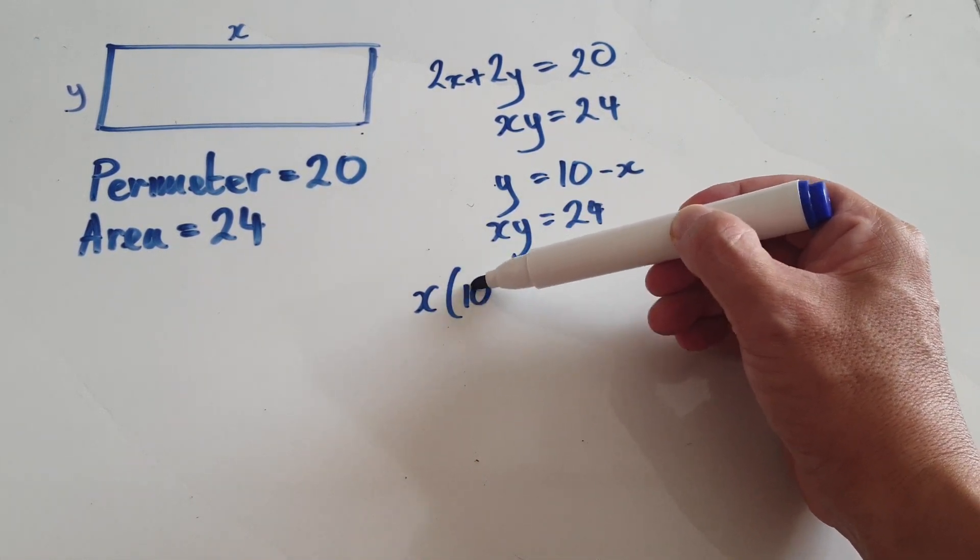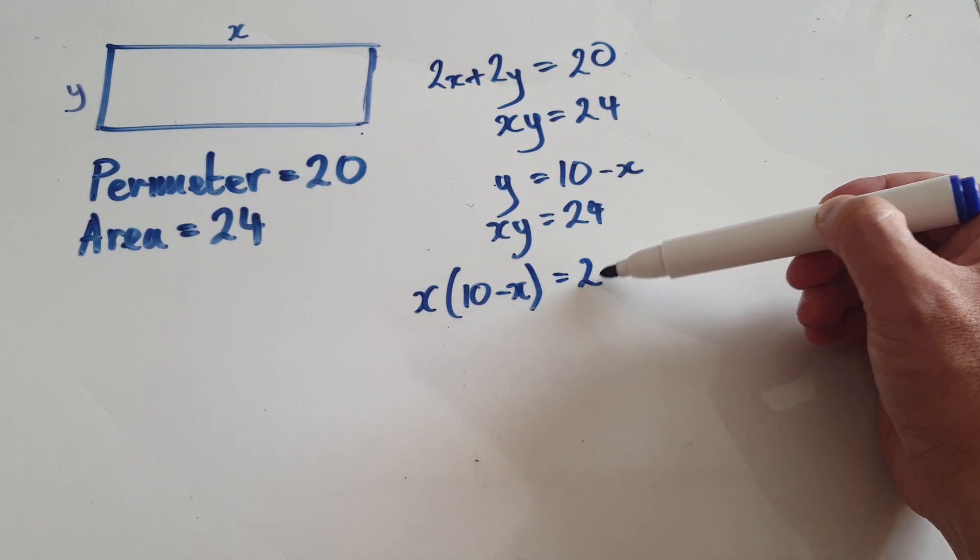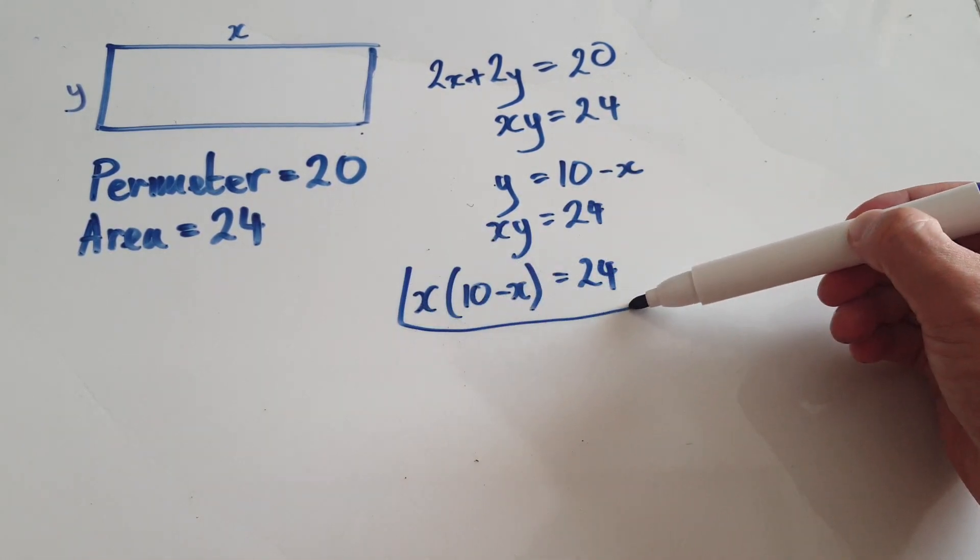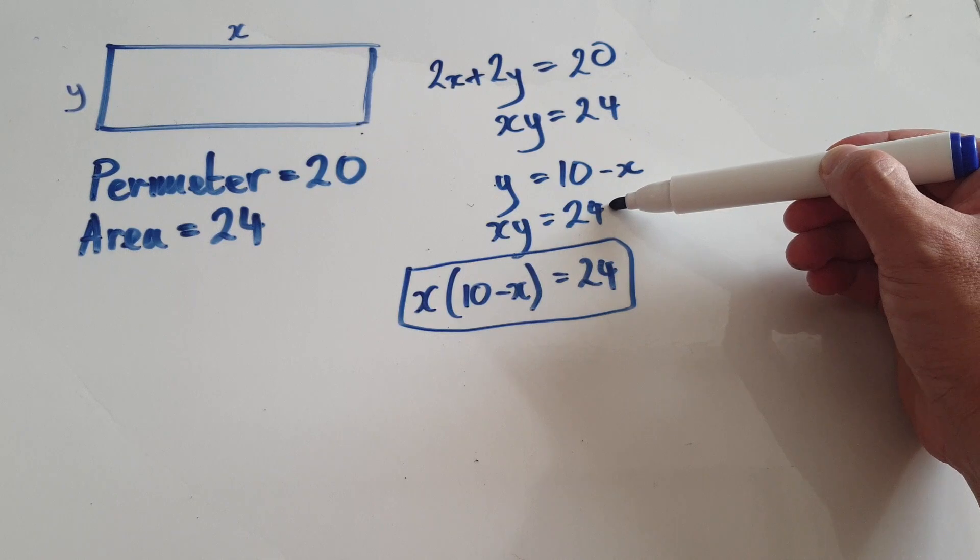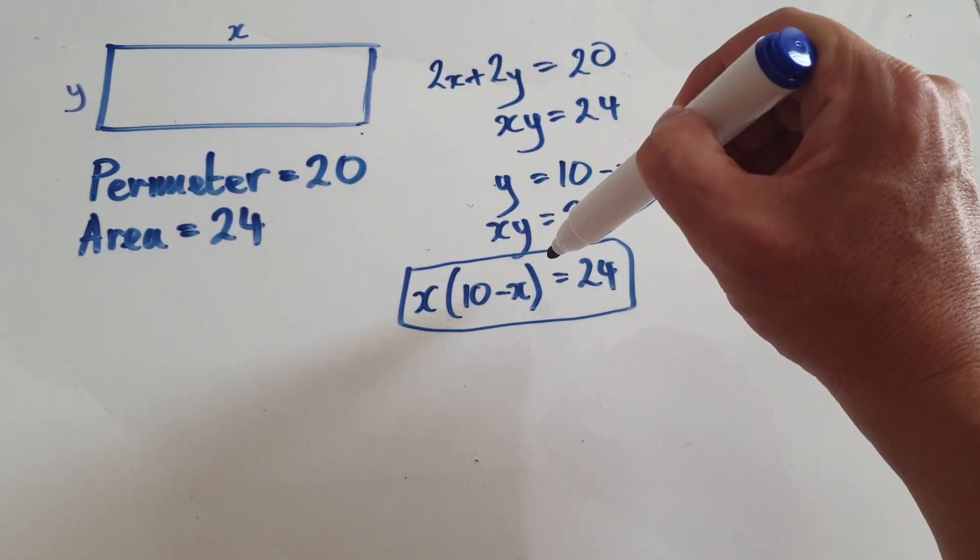So that would be x, remember y is this thing here, so put it into the y here. So that would be 10 take away x equals 24. You see, if we can solve this then we will automatically satisfy these two equations, so it's just really down to us solving this equation.